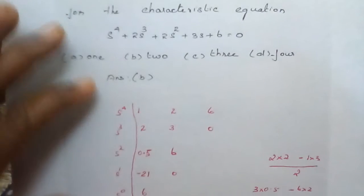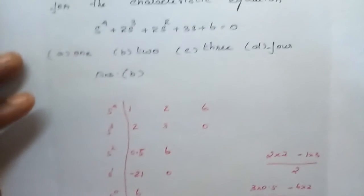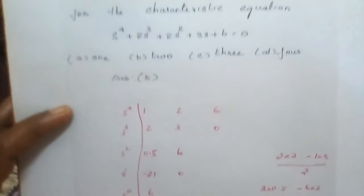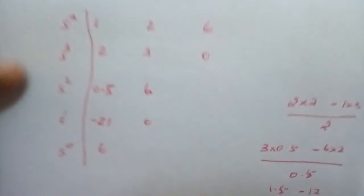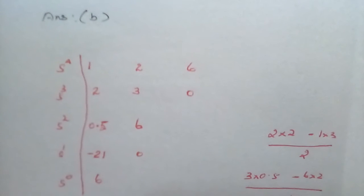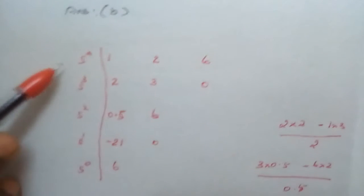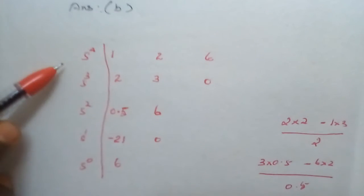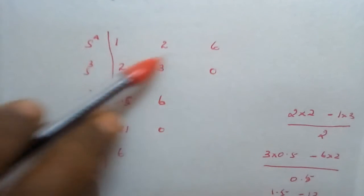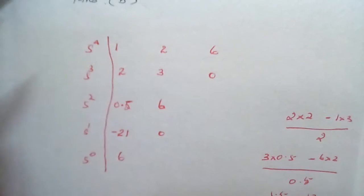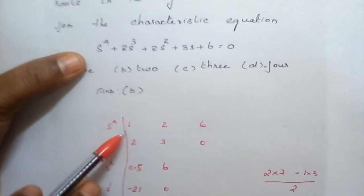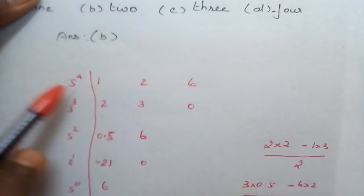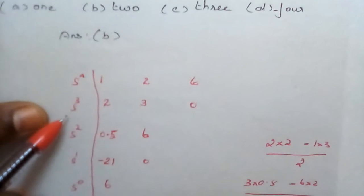How do we find the roots lying in the right half of the S-plane? By the Routh's criterion table. I have formed the Routh array starting from S⁴ down to S⁰. For the S⁴ row, I filled the even-order terms: 1, 2, and 6. For the S³ row, the odd-order terms: 2, 3, and 0.